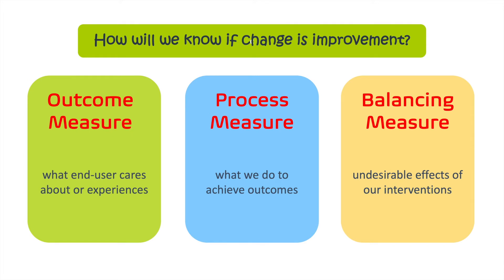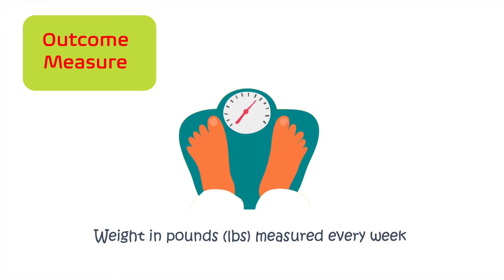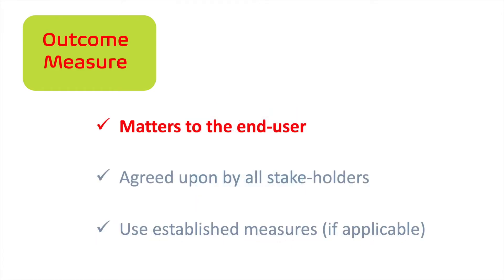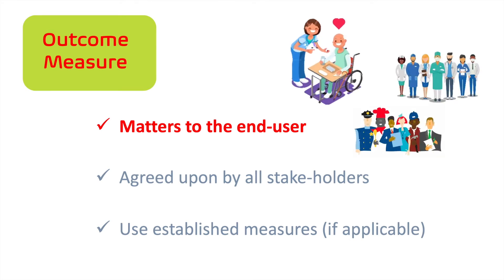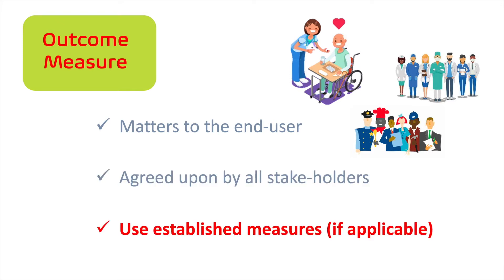An outcome measure is what you want to achieve and what matters to you the most. In this example, the outcome measure is going to be your weight, that you will monitor perhaps every week. Outcome measures are what matters to the end users of the process. In healthcare, the end user is most often the patients, but it can also be staff, trainees, or other people in the system. Outcome measures will be tracked throughout the project and should be agreed upon by all stakeholders. When possible, use an existing measure that is well established in the literature or the medical community.